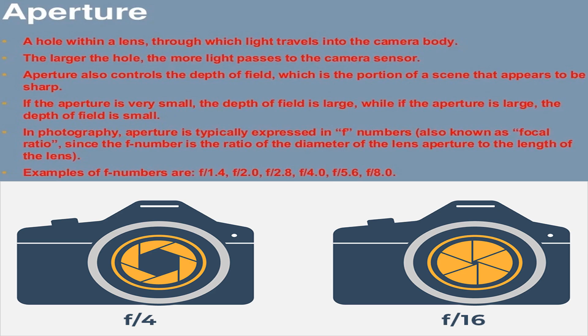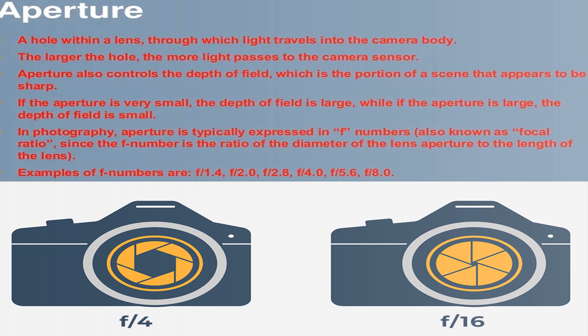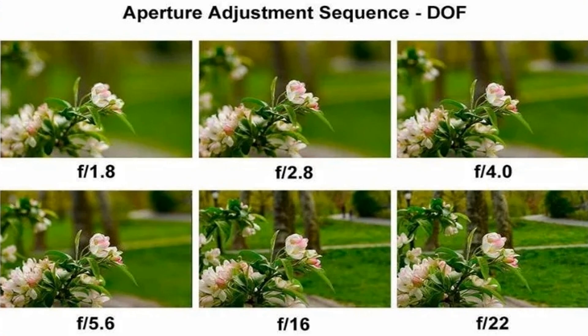The larger the aperture hole, the more light passes to the camera sensor. Aperture also controls the depth of field — the portion of a scene that appears sharp. If the aperture is very small, the depth of field is large; if the aperture is large, the depth of field is small. Aperture is expressed in f-numbers (focal ratio), such as f/1.4, f/2.0, f/2.8, f/4.0, f/5.6, f/8.0.